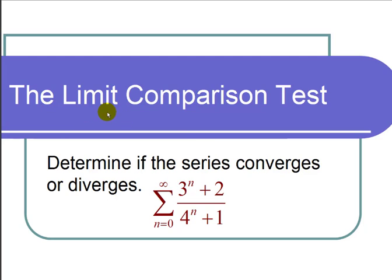This is a video on the limit comparison test. The question states, determine if the series converges or diverges. We have the summation from n equals 0 to infinity of 3 to the n plus 2 over 4 to the n plus 1.